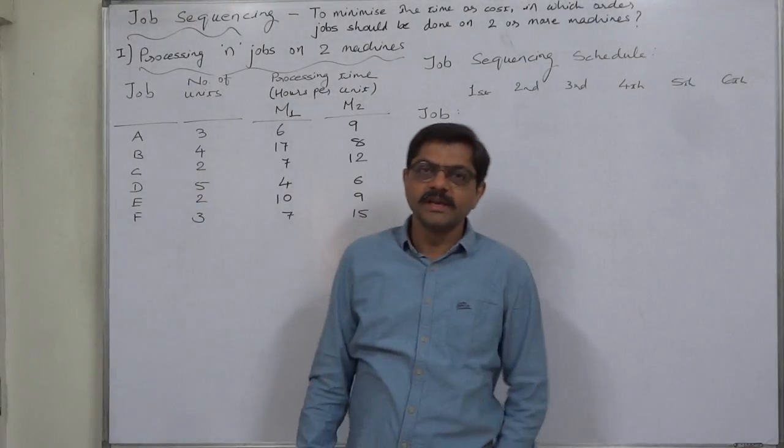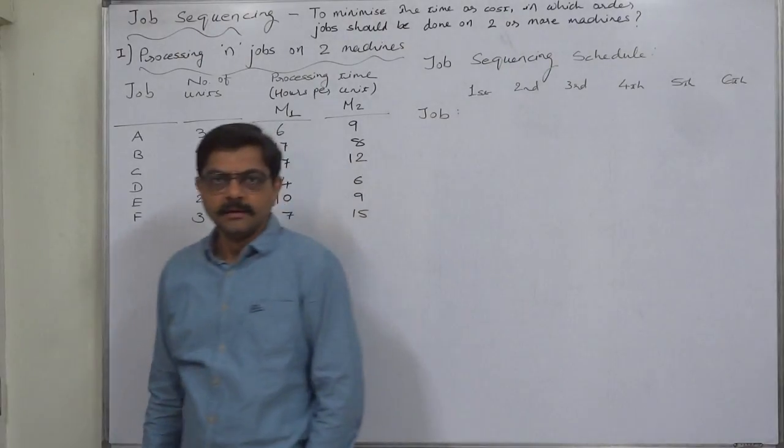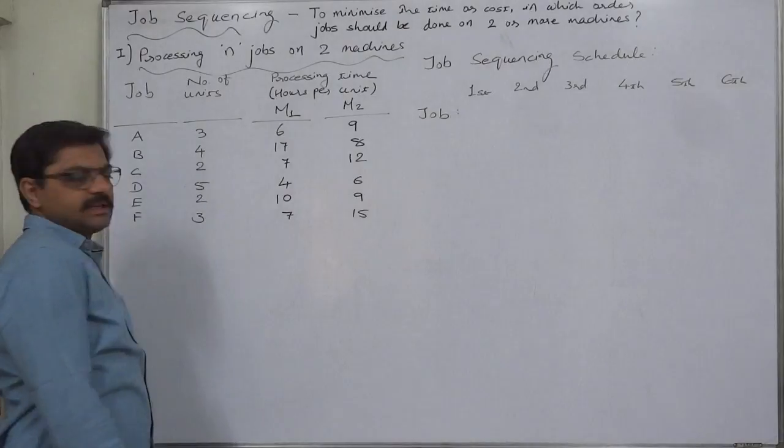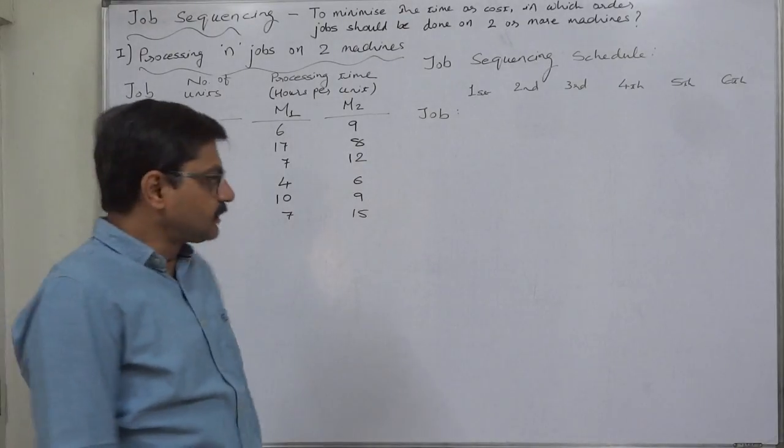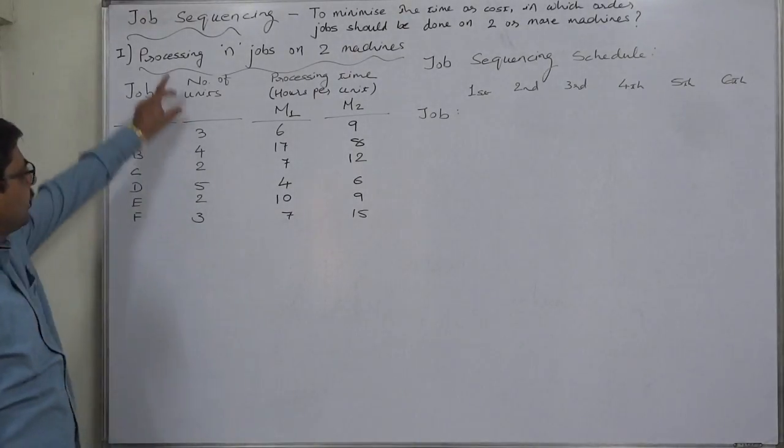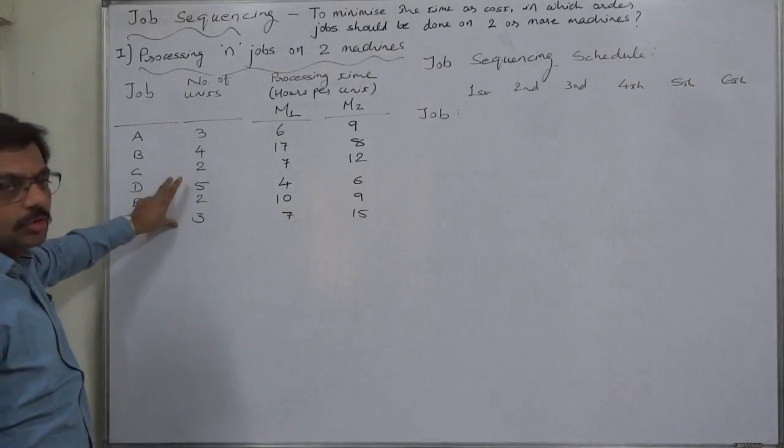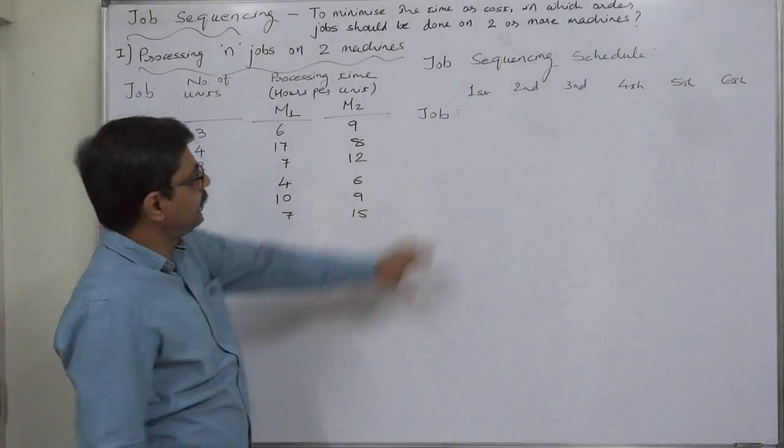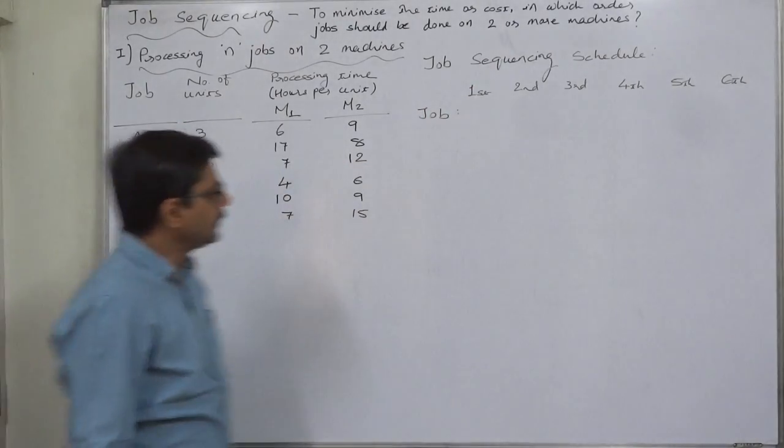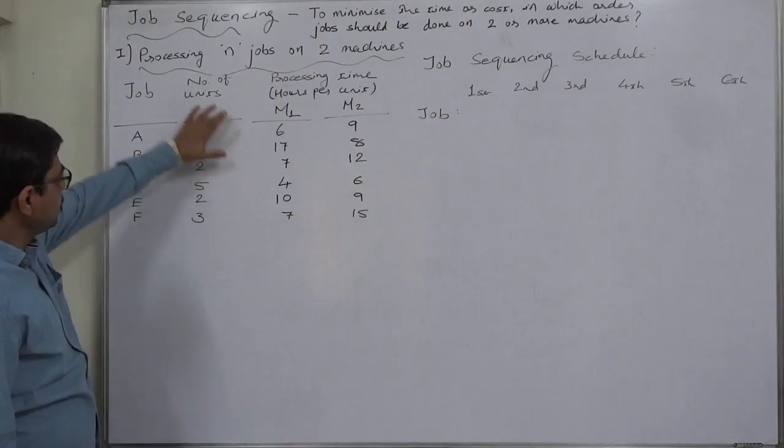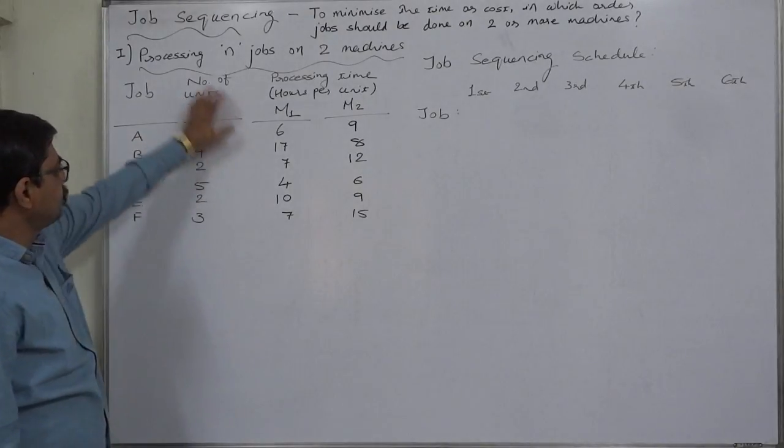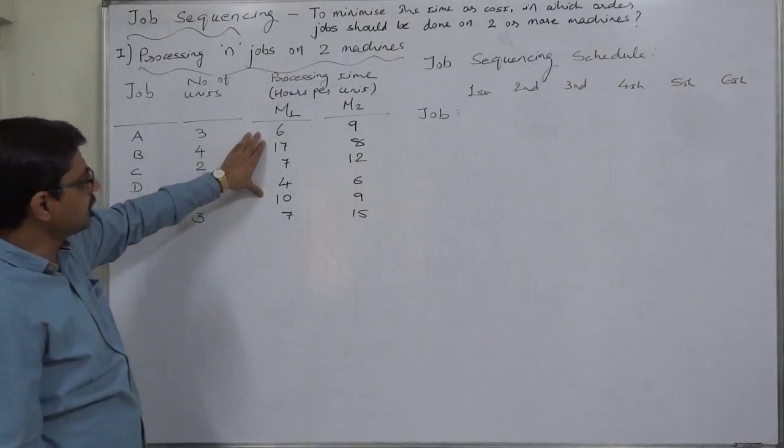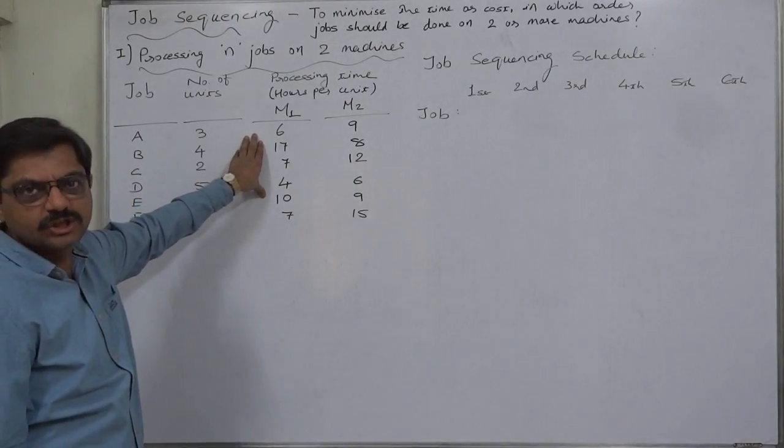Hello and welcome to a new case in job sequencing: processing jobs on two machines. This time we have a case where information regarding the number of units in each job is also available. However, at the time of job sequencing, we don't require considering the number of units. This is the processing time in hours per unit.